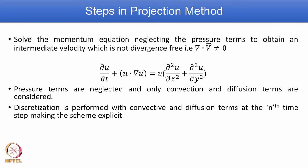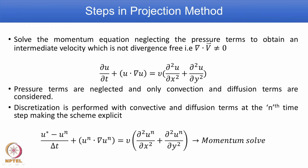Discretization is performed for both the convection and diffusion terms. At the nth time step, pressure is evaluated at the nth time level. The new time level quantity to be determined is given the superscript star. Because pressure is not considered, the obtained velocity is a temporary velocity field — hence we use the superscript star.